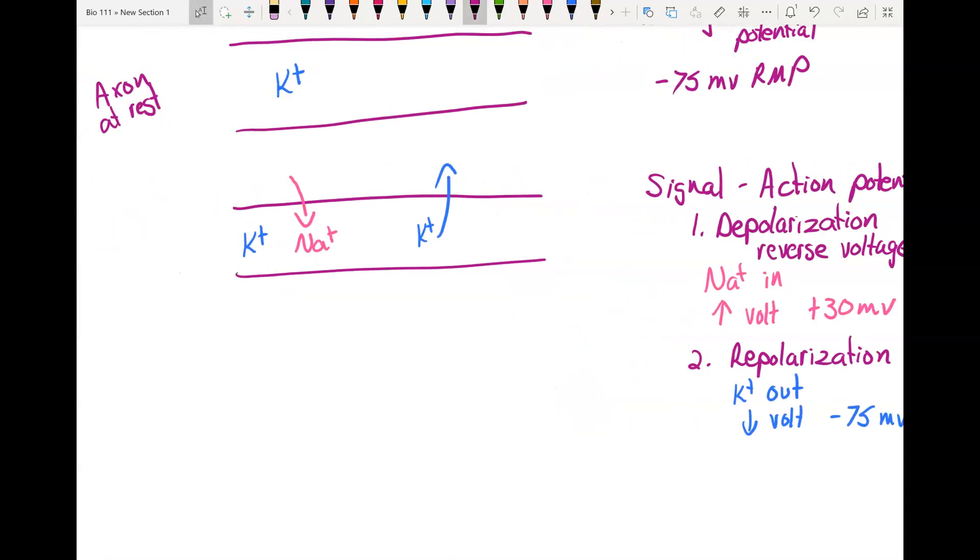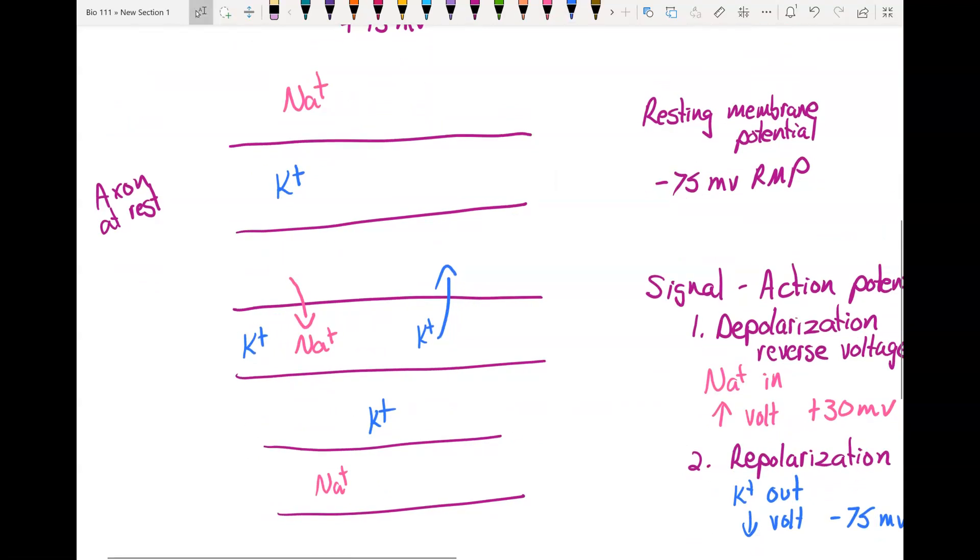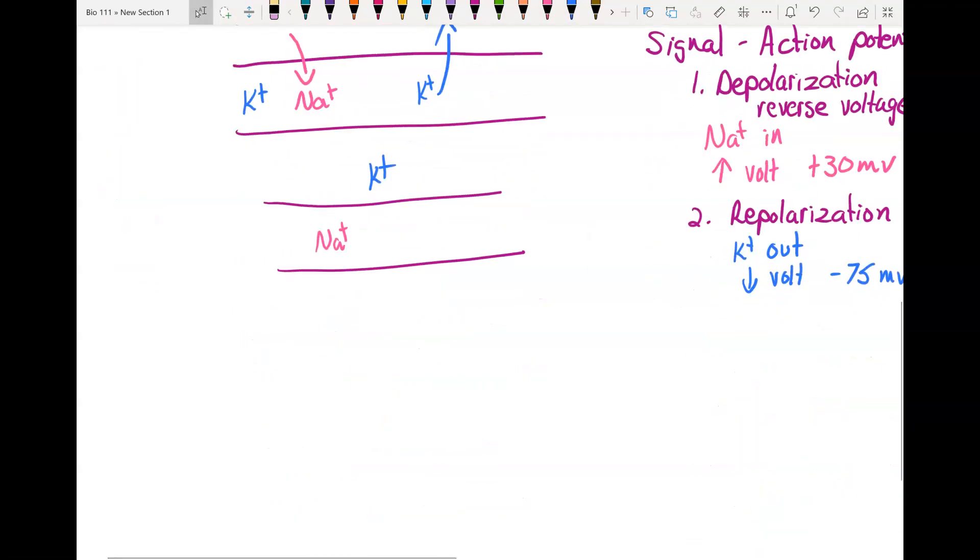If we look at our neuron now after the action potential. Now your sodium is inside and your potassium is outside. We flipped them. We started off with the sodium outside and the potassium in. Now you have to reset back to resting. And that is where your sodium potassium pump comes in. And there's a picture of this in your book. The sodium potassium pump pumps the sodium back out. It pumps the potassium back in. And now you are reset and ready for your next signal.